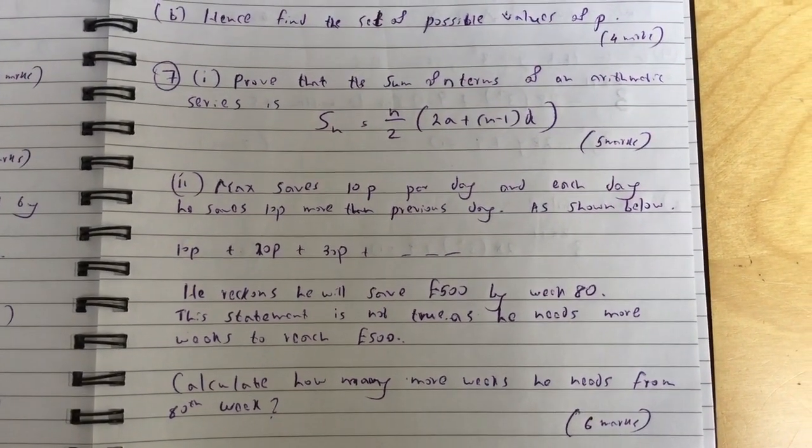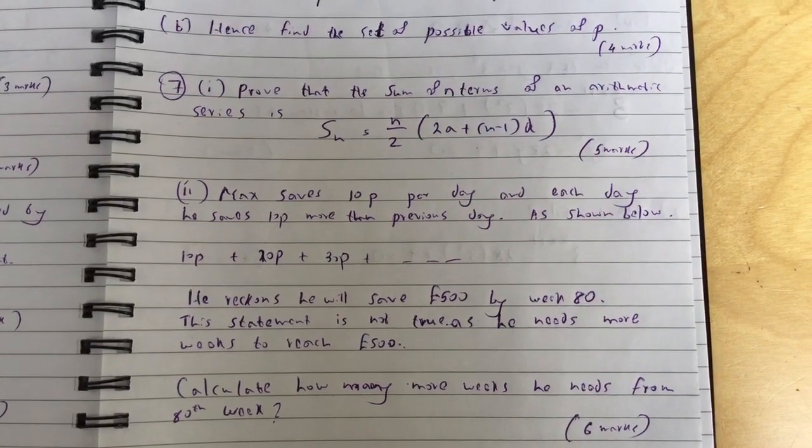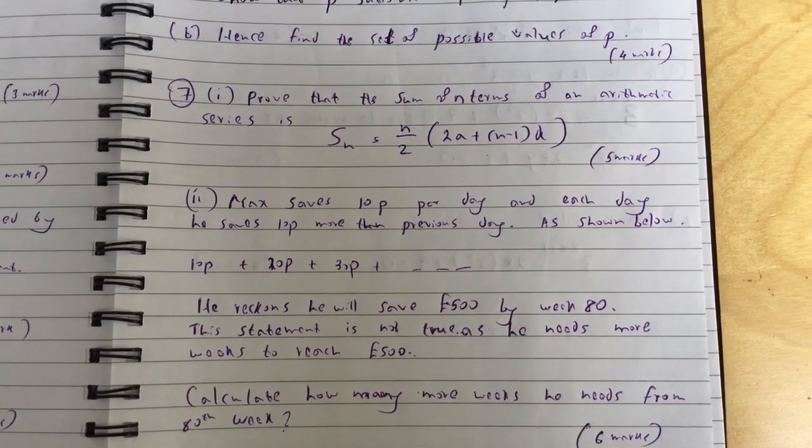Question 7: (i) Prove that the sum of n terms of an arithmetic series is Sn equals n over 2 times (2a plus n minus 1 times d).